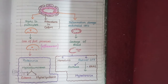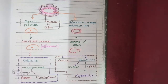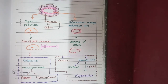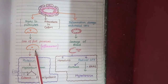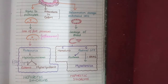Between the adjacent foot processes there are diaphragms made up of a negatively charged protein known as nephrin. Nephrin prevents the filtration of negatively charged plasma proteins into Bowman's capsule. Due to the destruction of these foot processes, the attachment to nephrin is lost, leading to increased filtration of plasma proteins — called proteinuria — and the resulting syndrome is known as nephrotic syndrome.